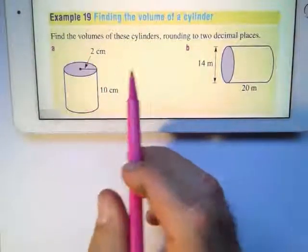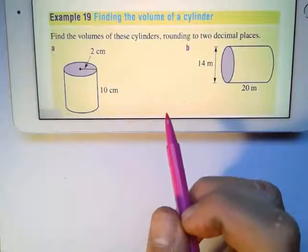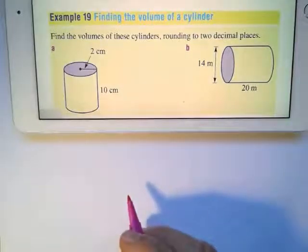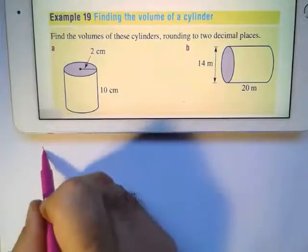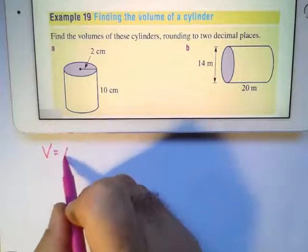What we're going to do is find the volume of these cylinders, rounding to two decimal places. I'm not going to learn the formulas by heart. I'm going to say the volume of a cylinder is area times height.